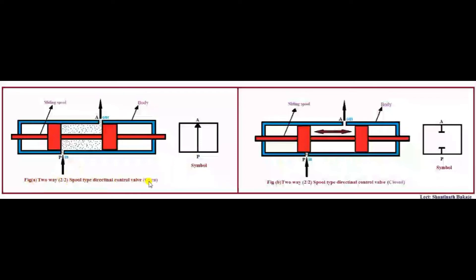Figure A shows case 1, that is the valve is in open position, and figure B shows the valve in closed position. In case 1, when the sliding horizontal spool is at rest, the fluid enters the inlet port and directly flows out through port A as shown in the figure. In the symbol, the fluid enters at port P and directly flows out through port A.